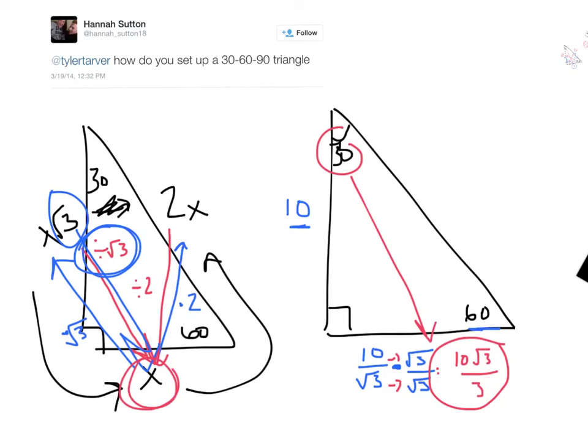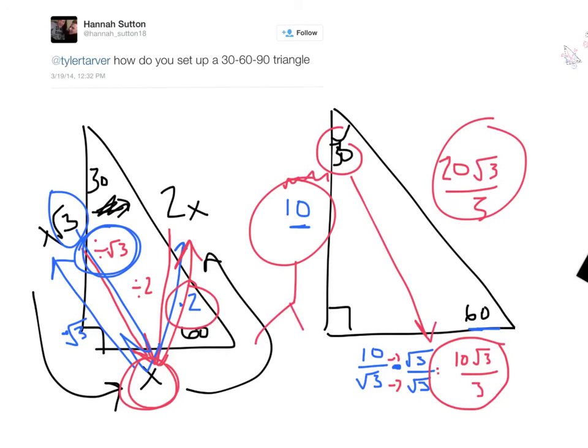And then what do we do to go from x up here? We just multiply it times 2. So we do 10 radical 3 over 3 times 2, which would be 20 radical 3 over 3. And you're done. You found all three sides of your triangle.